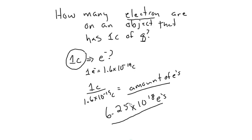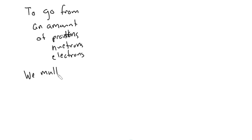One, to go from an amount of protons, neutrons, and electrons, we multiply by little e, 1.6 times 10 to the minus 19th coulombs.